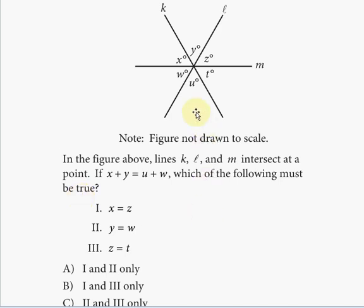First of all, since these three lines intersect at one point, that means that u and y are vertical angles. And as you know, vertical angles must be equal. So now, if vertical angles are equal, we can substitute the value of u for y.